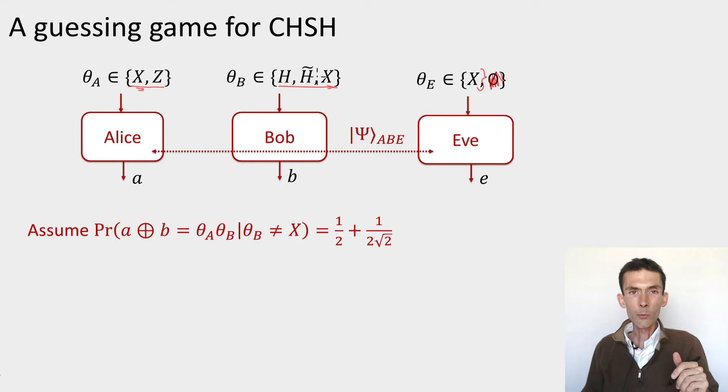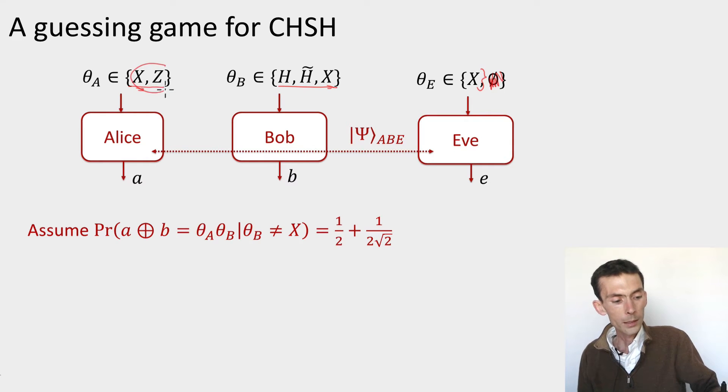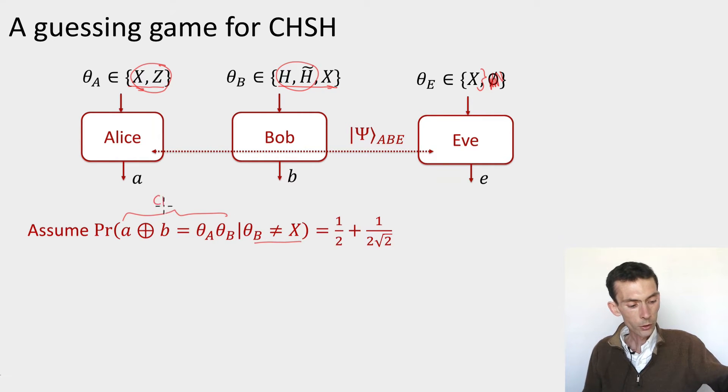The one thing that I do know, because I'm checking as part of my protocol, is that the probability that the outputs A and B that are produced by the A and B devices, when the inputs are anything for Alice and H or H tilde for Bob, so meaning that it's not the X input, then the probability that these outputs satisfy the CHSH correlations is...